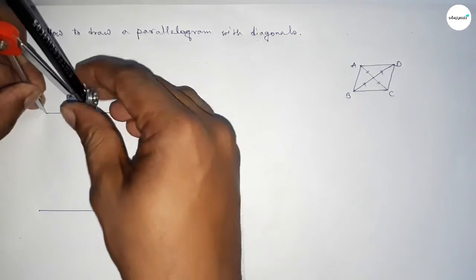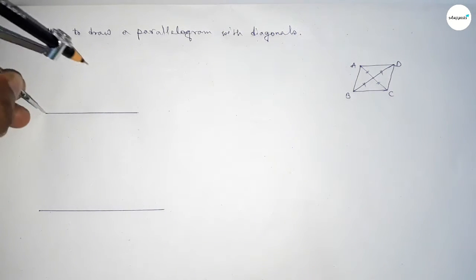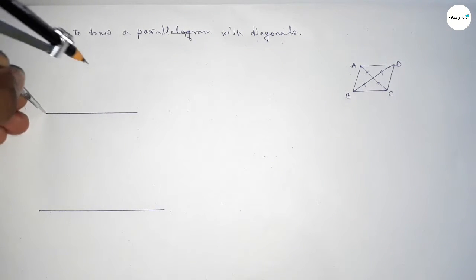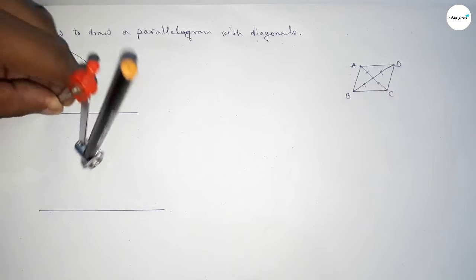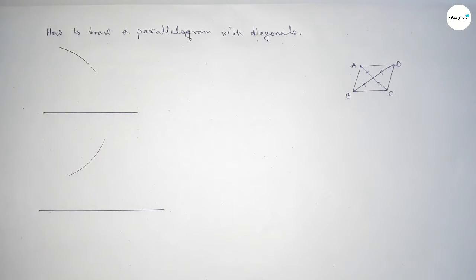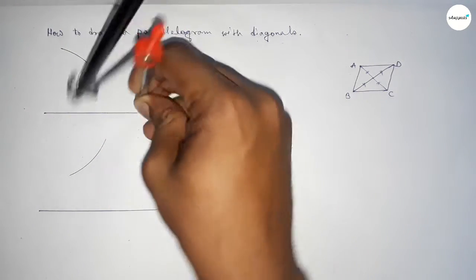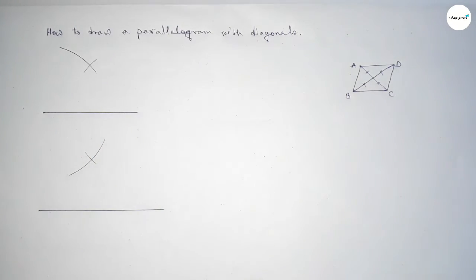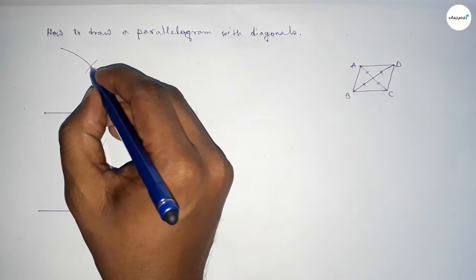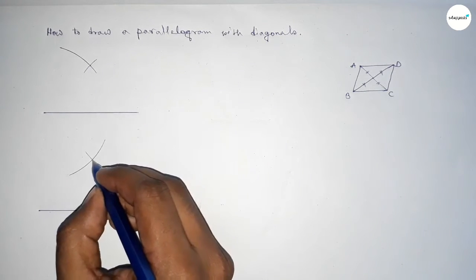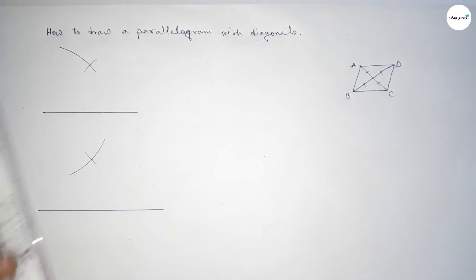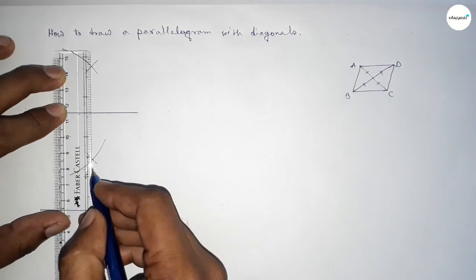By this property we have to first bisect the line. Taking greater than half of this and drawing an arc, then with the same length cutting here and here. So first bisecting the first diagonal.